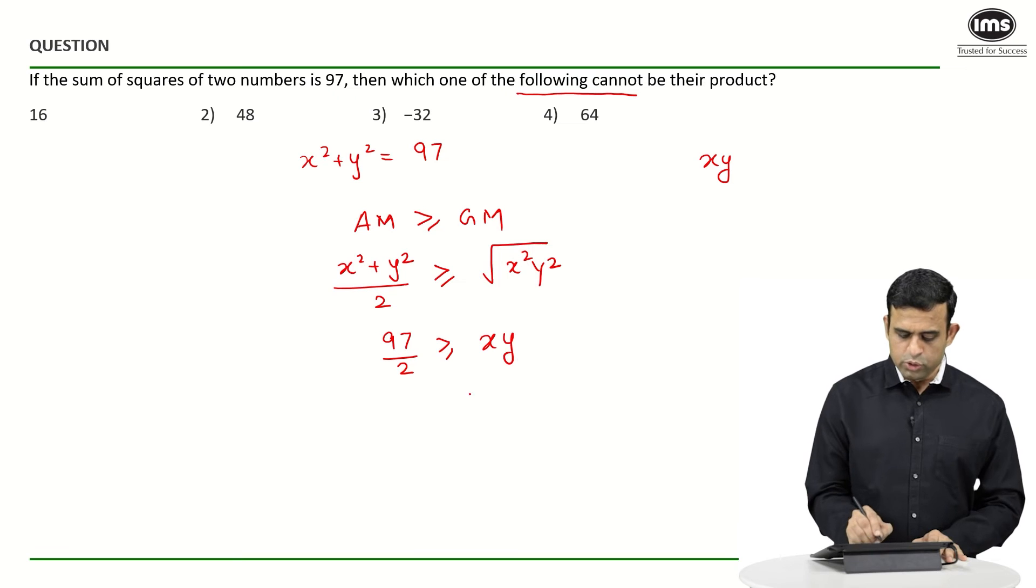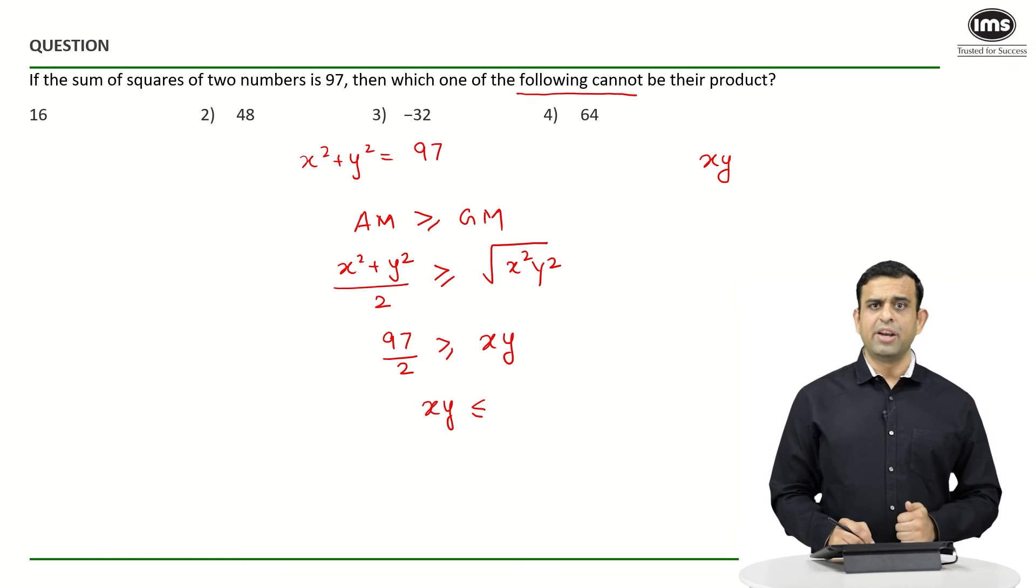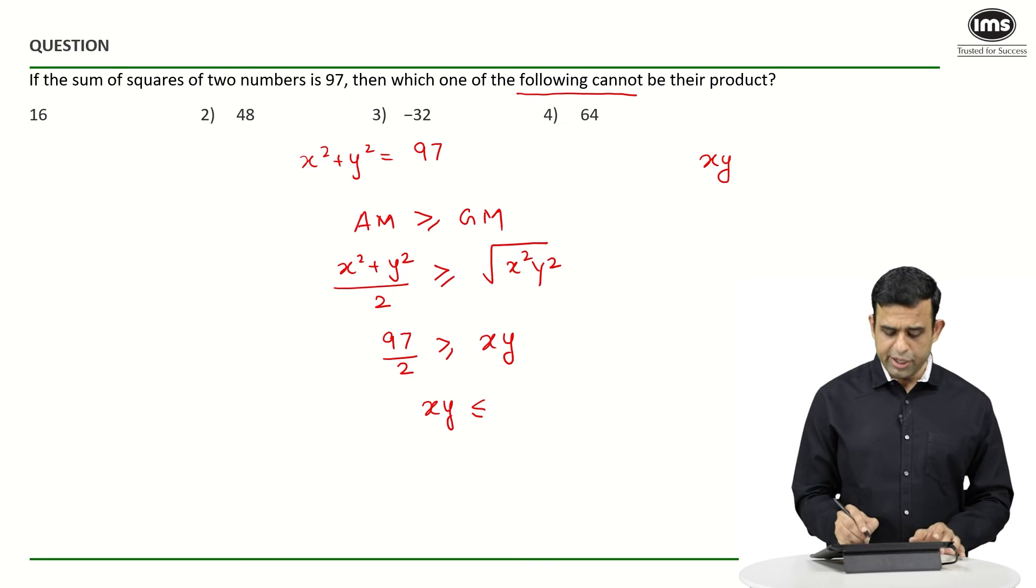So can I say one thing here, that xy must be ≤ 97/2, giving us the number 48.5.